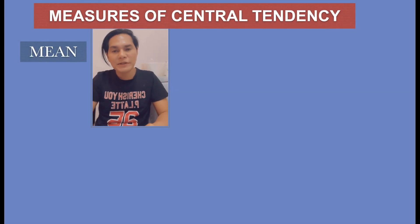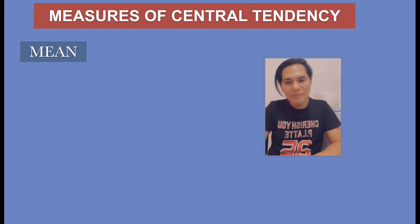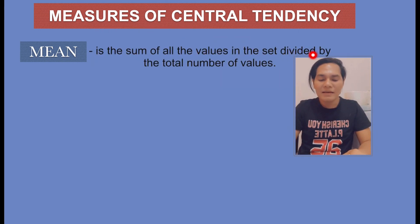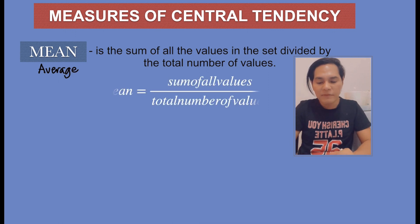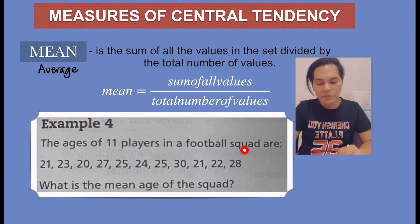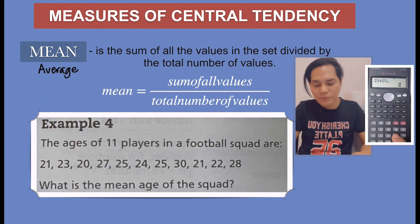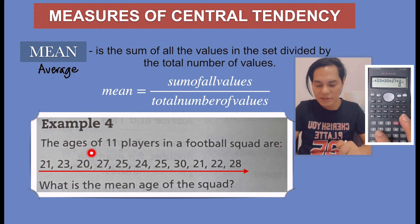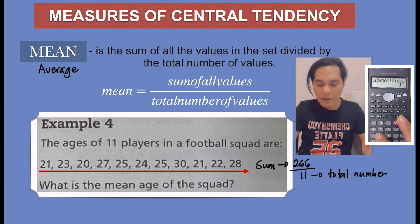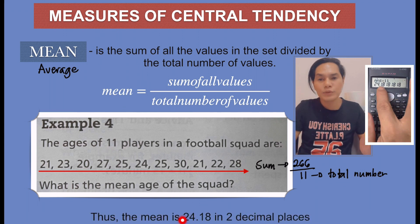The last but not the least measure of central tendency is the mean. The mean is just the sum of all the values in the set divided by the total number of values. Another term for mean is simply the average. For example, the ages of 11 players in a football squad are 21, 23, and so on and so forth. What is the mean age of the squad? Just add up the ages of the squad, and the sum is 266 divided by the total number, which is 11 players. The mean is 24.18 in two decimal places.